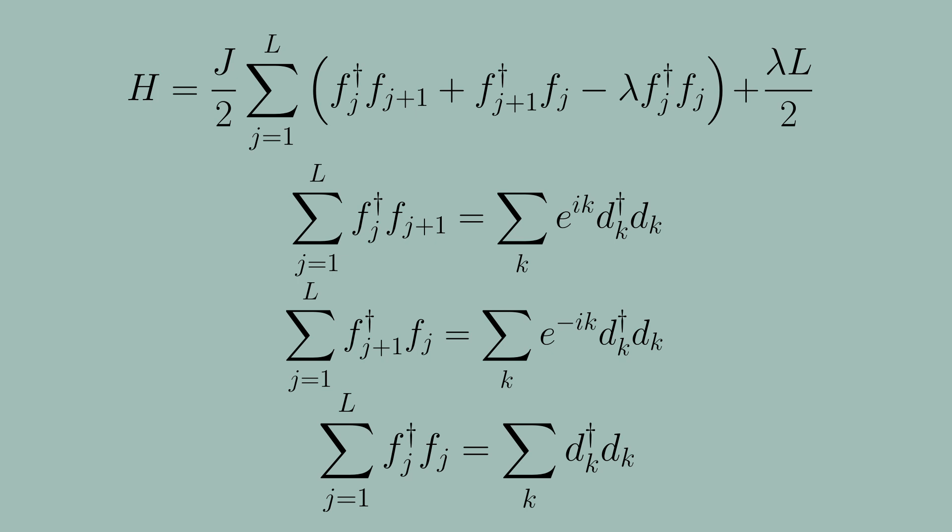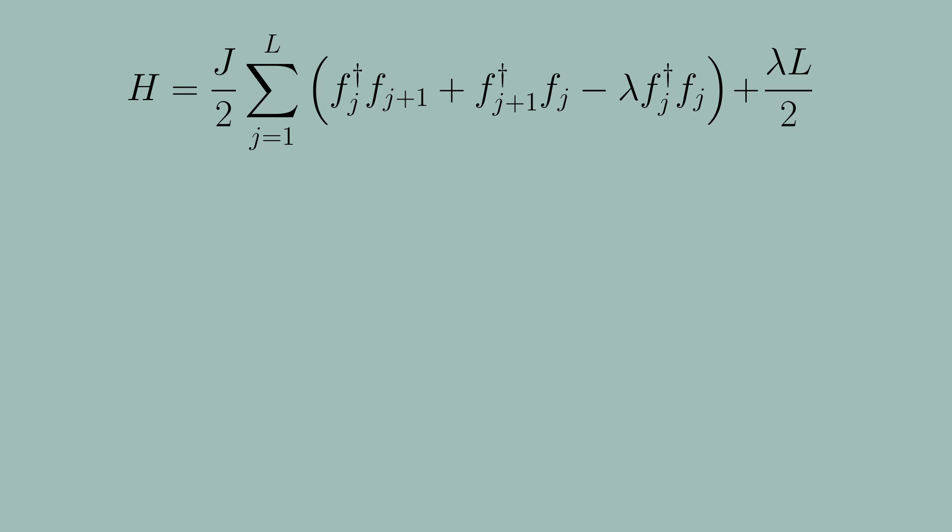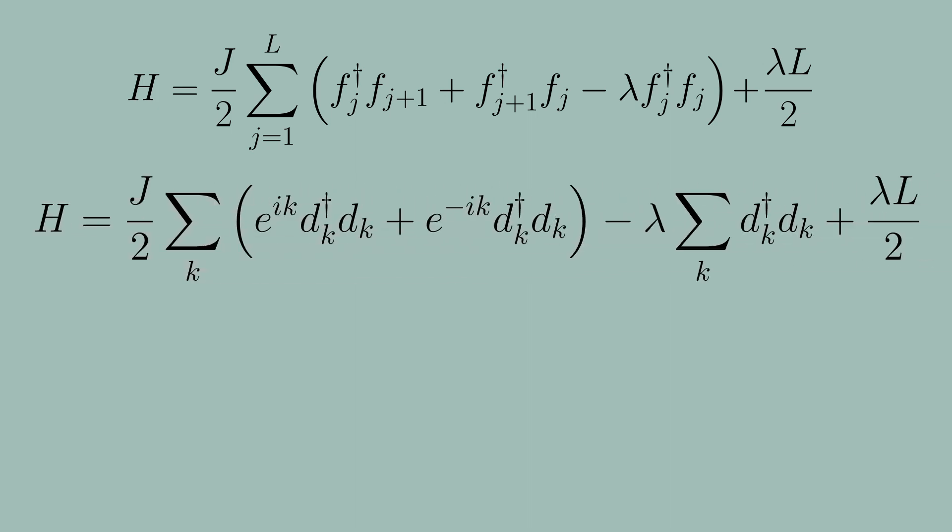So now we can write down our model again. We see that the model can be rewritten completely in terms of these discrete momenta operators as the following Hamiltonian. This can of course be simplified to the following expression written here. So this form is of course really simple but we're going to simplify it just a little bit more to simplify our discussion.